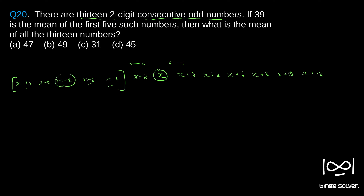If it were an even count of numbers, we would add all and divide. But even if we compute (x−12 + x−10 + x−8 + x−6 + x−4) divided by 5, we still get x−8. So the middle number of the first five is x−8, which is the mean of those five numbers.